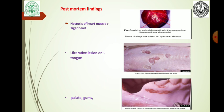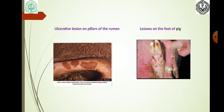In the picture, there is a lesion below the incisor. Ulcerative lesions are seen on the pillars of the rumen. Due to higher magnification, there is a severe, irregularly shaped erosion visible in the rumen. Lesions on the foot of pig are also observed.